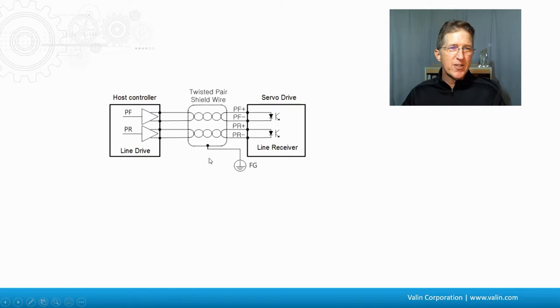Let's take a look at an example here where there is a controller with a line driver going through the twisted pair I talked about, and here's the drive with the receiver. So this is differential. You see the line driver, and you see the line receiver.